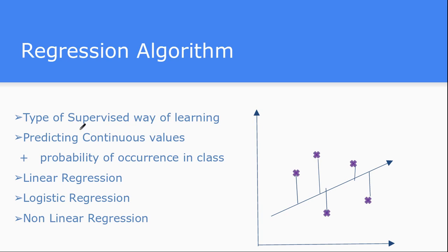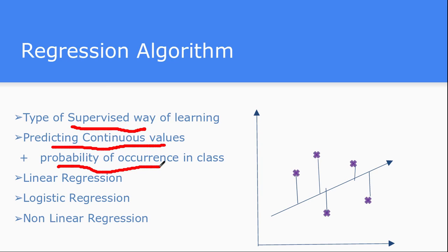Regression is one kind of similarity-based group of algorithms. Regression is one type of supervised learning. In supervised learning you are given data plus labels associated with individual data points, and you need to model that data. This regression kind of algorithm predicts a continuous value output, or it can even predict the probability of occurrence of individual labels.